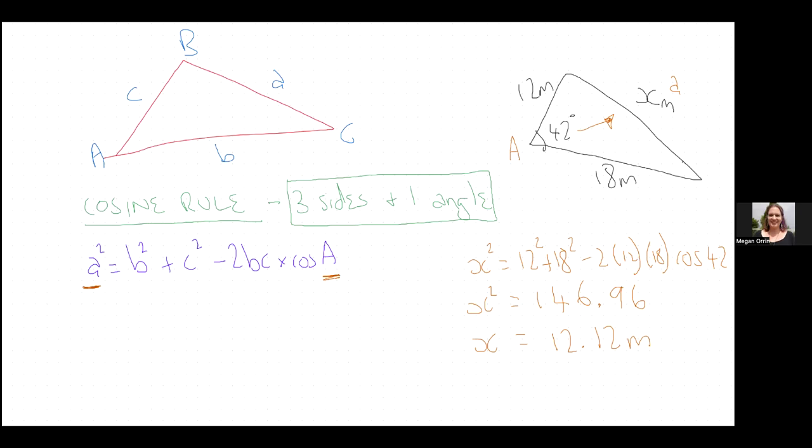So all you're doing is plugging the information into this formula and then just typing it into calculator. Make sure you take the square root. Okay, let's do an example where it's an unknown angle instead. I'm going to put them all up in Google Classroom. Take a breath, you don't need to copy it down and write the seconds.